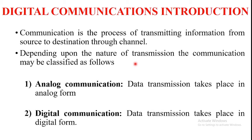What is analog communication and what is digital communication? When data transmission takes place in the form of analog, it is called an analog communication system. When data transmission takes place in the form of digital, it is called a digital communication system.